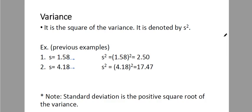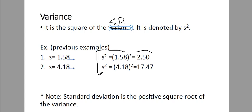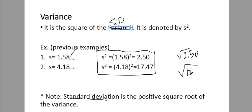The last measure is the variance. The variance is the square of the standard deviation, denoted by S squared. From the previous example, S is 1.58, so squaring gives sample variance of 2.50. For the second problem, the sample variance is 17.47. Conversely, if you are given the variance, to get the standard deviation you take the positive square root: the square root of 2.5 is approximately 1.58, and the square root of 17.47 is approximately 4.18.